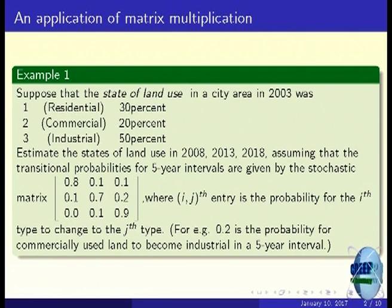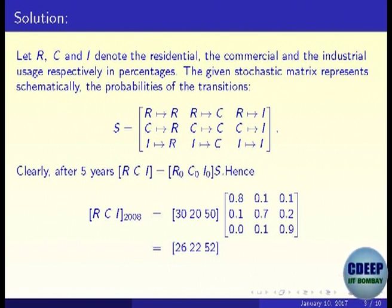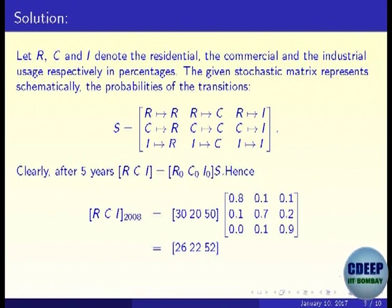We have to estimate the land use in various years — 2008, 2013 — what will the percentage of land use be for various kinds of activities. To recapitulate: the entry R-to-R (residential to residential) is 0.8, meaning 80% probability that residential area remains residential. C-to-R, I-to-R probabilities are also given. To compute the land use after 5 years, we perform a matrix multiplication.